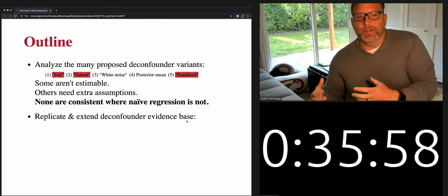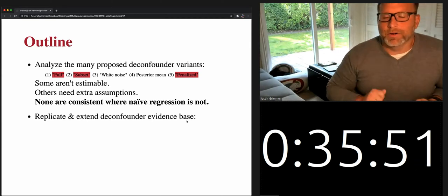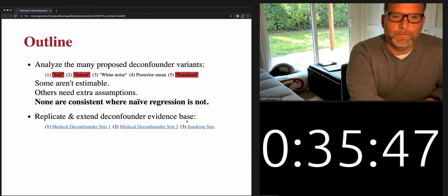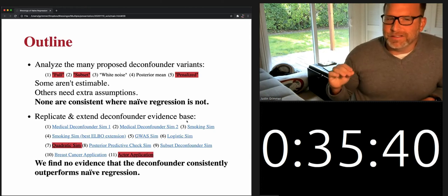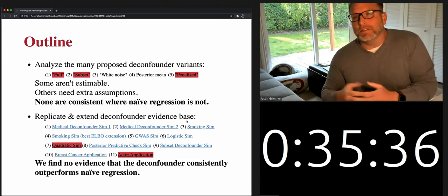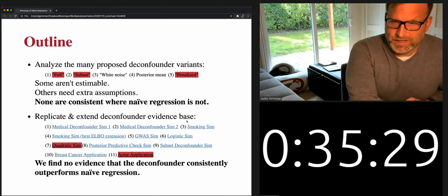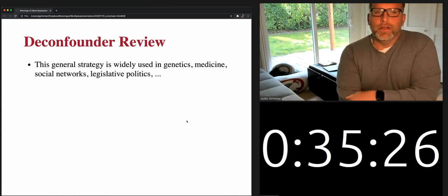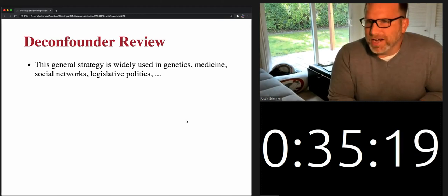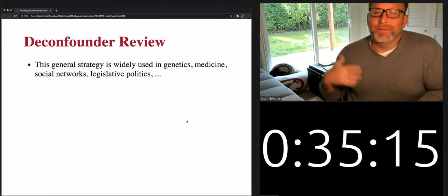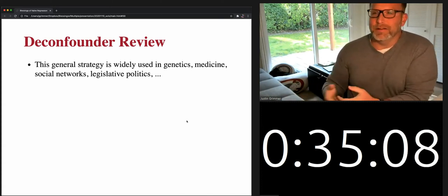These are asymptotic results, so we're also interested in what happens in finite settings. We will replicate and extend a number of simulations and empirical applications of the D-confounder. What we find is that there's no evidence the D-confounder consistently outperforms naive regression, and you can end up with results that look quite counterintuitive and facially invalid by not taking seriously other measurable confounders. First, I'll establish that you should care about this: it's a general strategy widely used in genetics and medicine, and it implicitly shows up in the study of social networks and legislative politics.